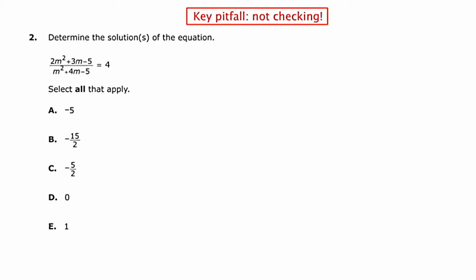And you'll notice in red at the top of the screen I put, the key pitfall in this question is not checking. Whenever you have a variable in the denominator of an equation, you want to make sure that you plug your answers back in to ensure you don't have an undefined situation. If your fraction ever reveals a number divided by zero, then you'd have to reject that answer as an extraneous solution.